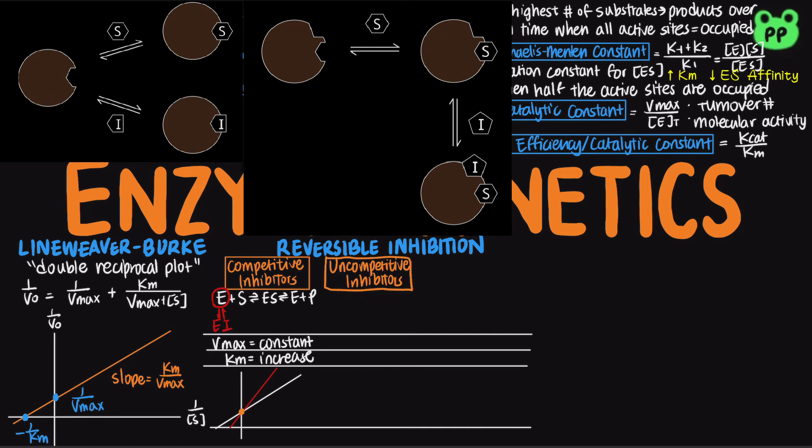An uncompetitive inhibitor binds the enzyme substrate complex at a site different from the active site. Both the maximum velocity and the Michaelis-Menten constant decreases by the same factor, as shown by parallel lines of inhibited and uninhibited plots.